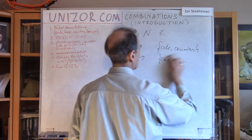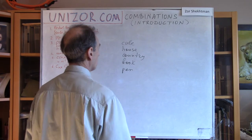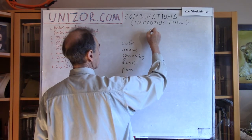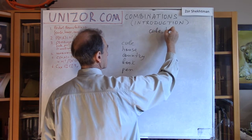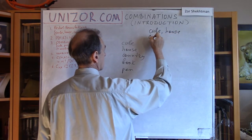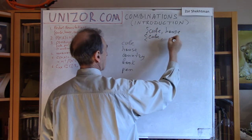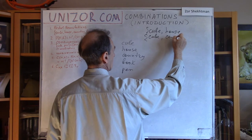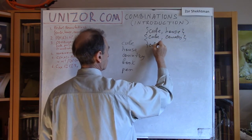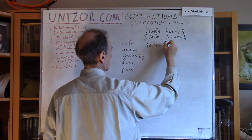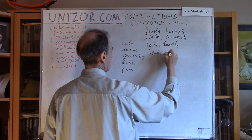We will explicitly count them all. On the first place we can have cube. On the second place we can choose house. Then, with cube, we can have a country. Or we can have a cube with a book. We can have a cube with a pen.